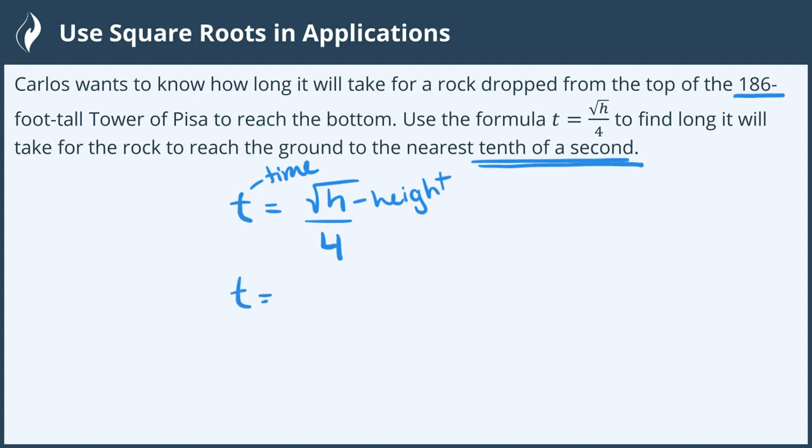Time equals the square root, the height given is 186, divide it by 4. Plugging this into my calculator, the square root of 186 is 13.63818.